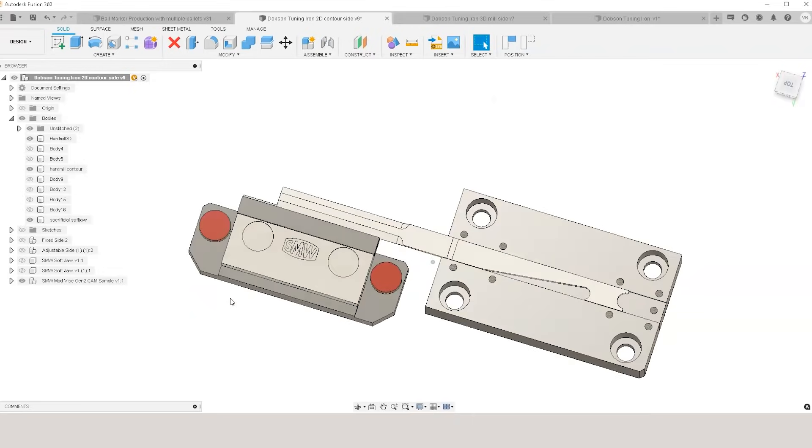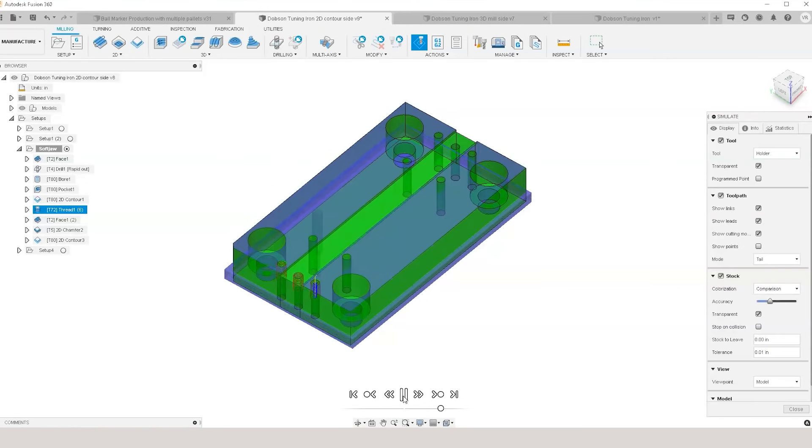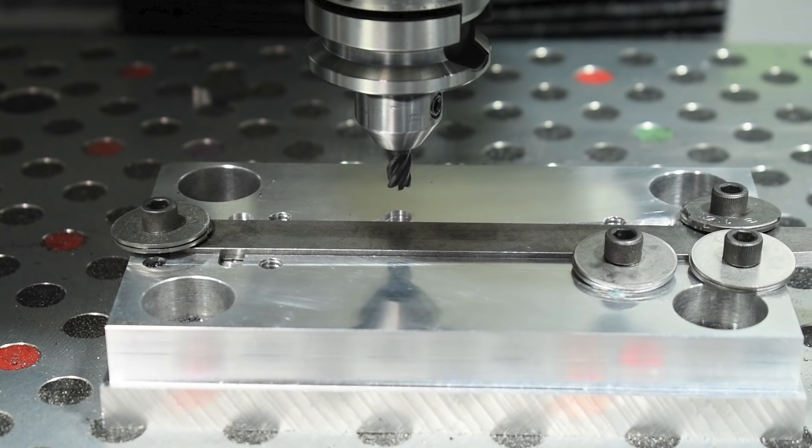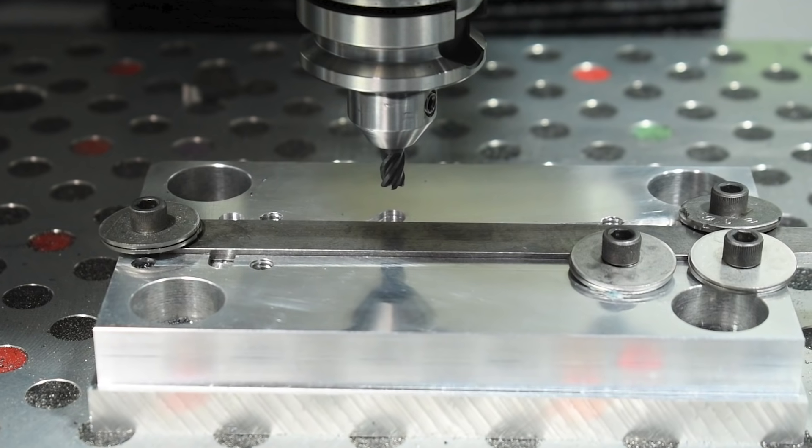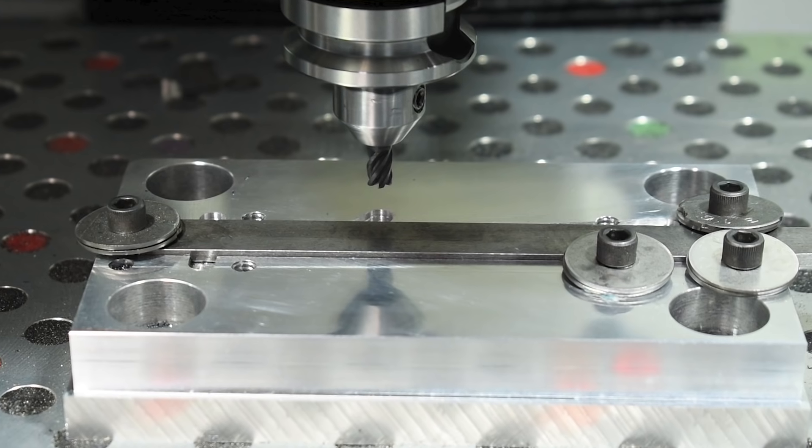I also added a variety of quarter-twenty threads in the soft jaw so that I could bolt on fender washers to apply axial force and hold the part down during machining. Side benefit, these washers were also consumable.